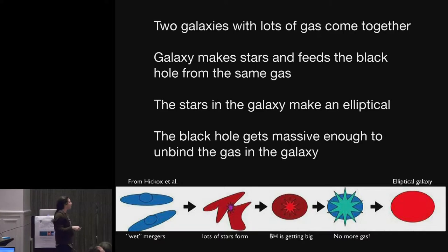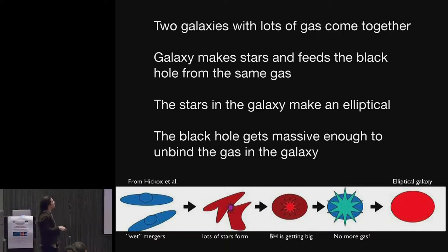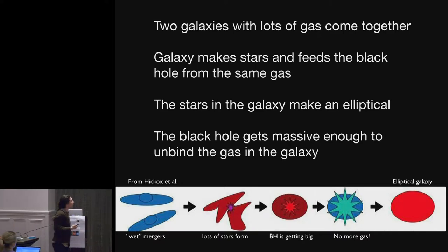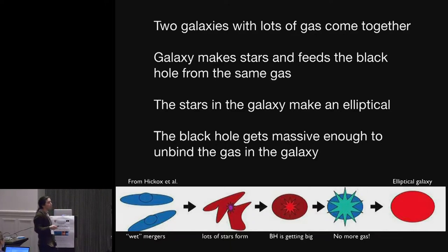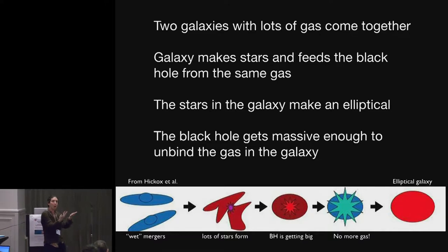Its limiting luminosity grows as well until it reaches a point where it has enough energy to remove all of the gas from the galaxy. And so you can imagine a sort of balancing act between the growth of the galaxy and the growth of the black hole.